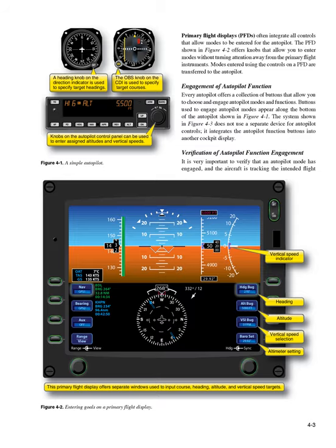Primary flight displays (PFDs) often integrate all controls that allow modes to be entered for the autopilot. The PFD shown in Figure 4-2 offers knobs that allow you to enter modes without turning attention away from the primary flight instruments. Modes entered using the controls on a PFD are transferred to the autopilot.